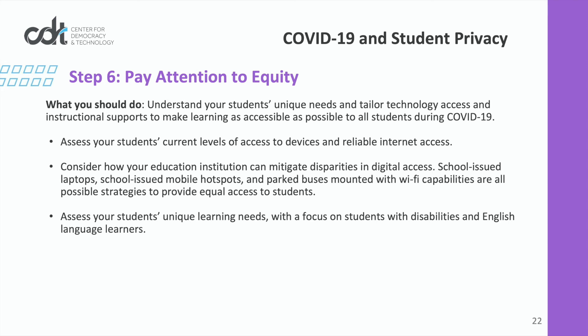Any effective equity mitigation must begin with understanding and assessment. In the case of technology access, take stock of your students' current access to devices and reliable internet. This will help you evaluate what kind of strategies and interventions you may want to employ to ensure they are able to participate in online learning. Strategies include providing educational laptops or tablets to students who lack device access and providing mobile hotspots or even deploying park buses mounted with wi-fi capabilities in areas with underserved connectivity access. Bear in mind that each of these initiatives requires privacy considerations and should be implemented with privacy best practices in mind. When considering students' learning needs, pay special attention to students with disabilities and English language learners, ensuring that distance learning tools have the needed accessibility features and appropriate language support.